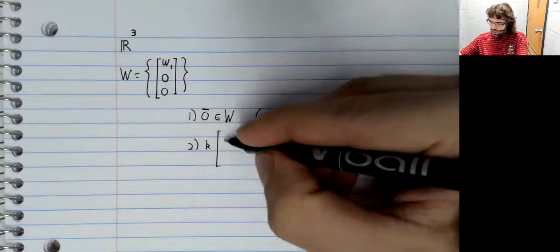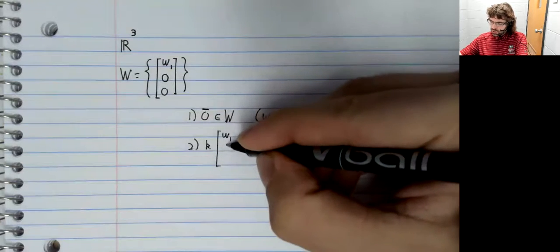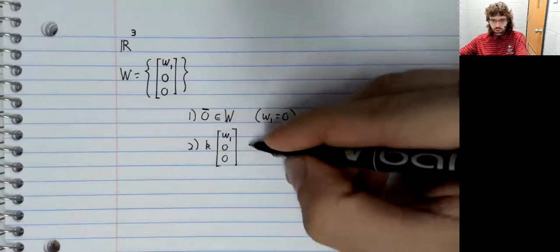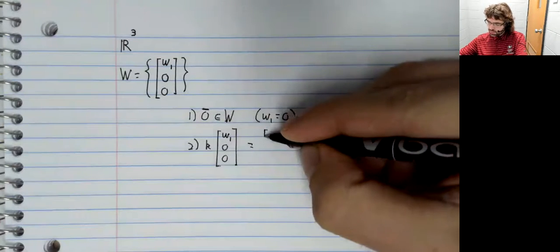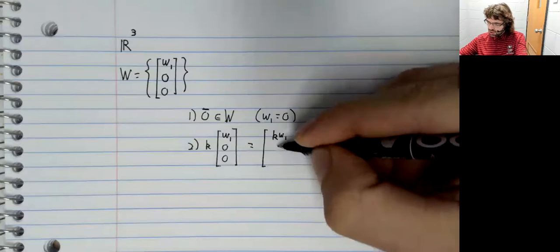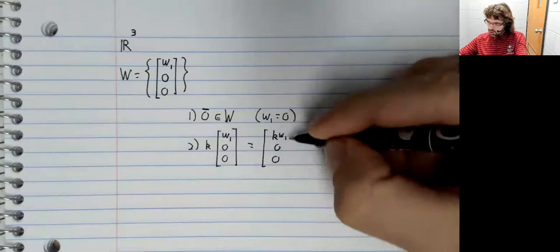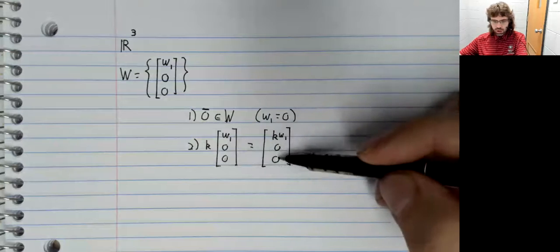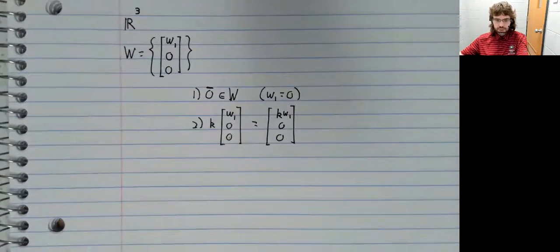It is closed under scalar multiplication. Whatever k is, it's not going to turn these zeros into non-zero numbers.